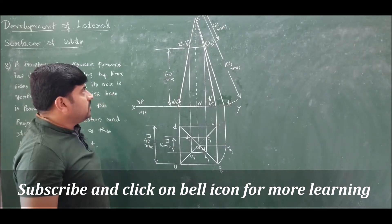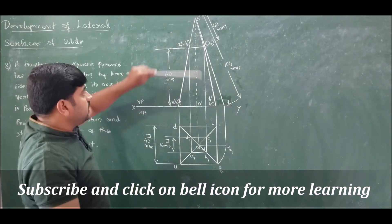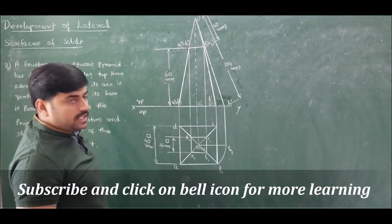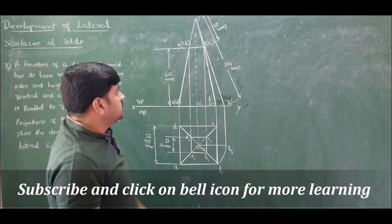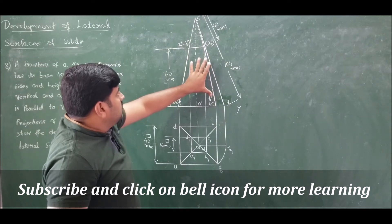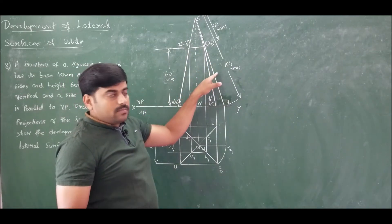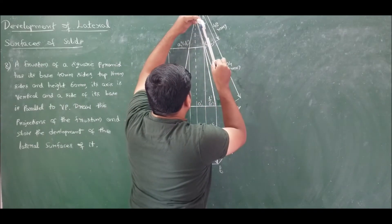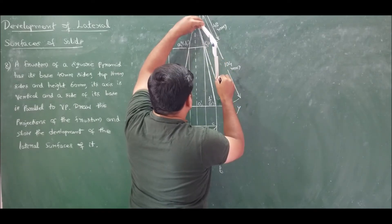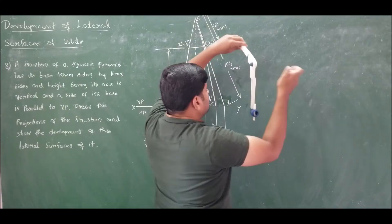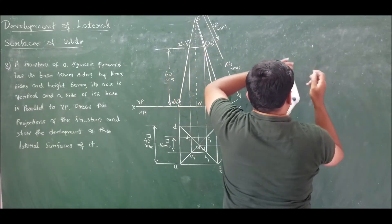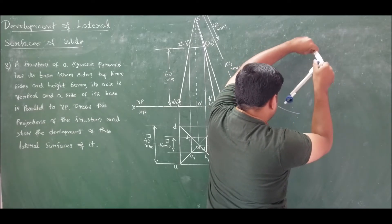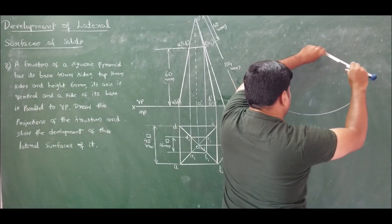This completes the front and top view, along with the cutting plane parallel to HP at a height of 60 mm. The top portion is removed and the bottom portion is retained as the frustum. Now let us draw the development of the lateral surface, for which we draw an arc of radius 104 mm. Draw the arc for an arbitrary angle since the exact angle is not yet known.